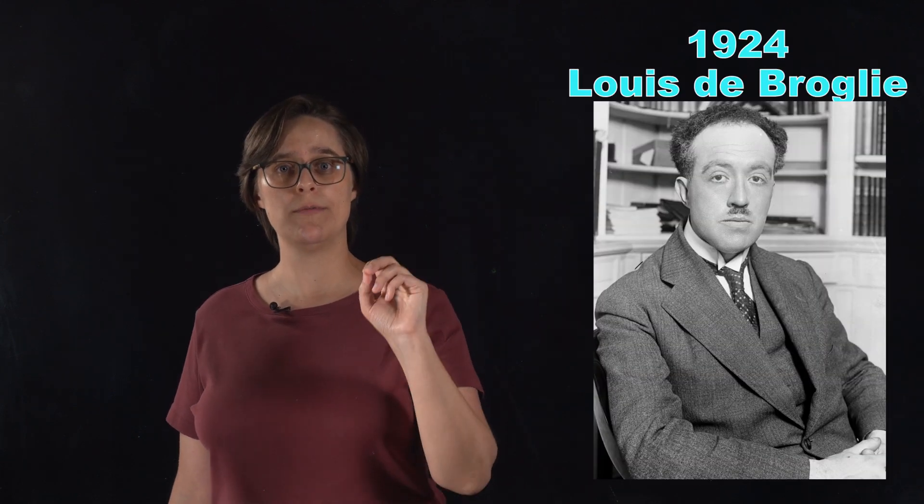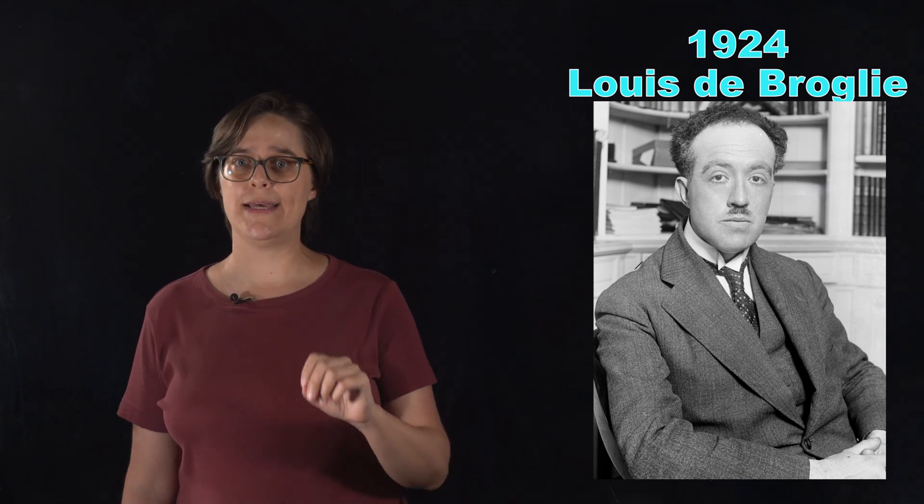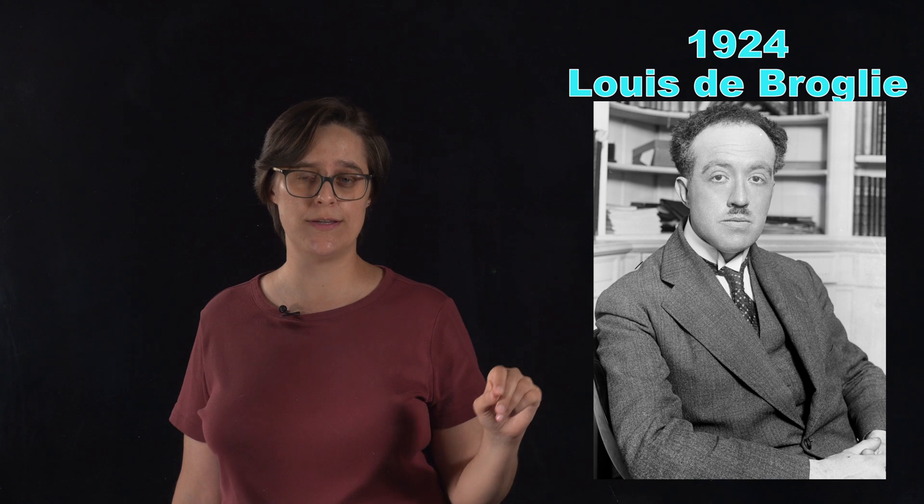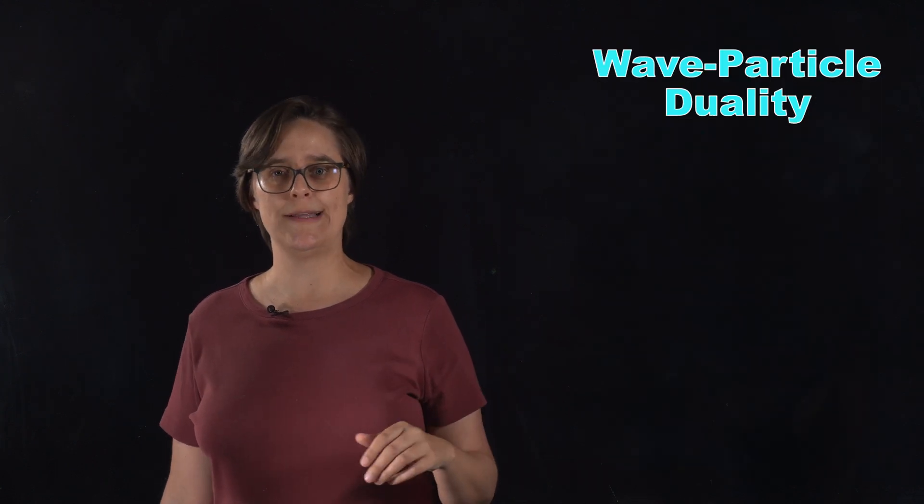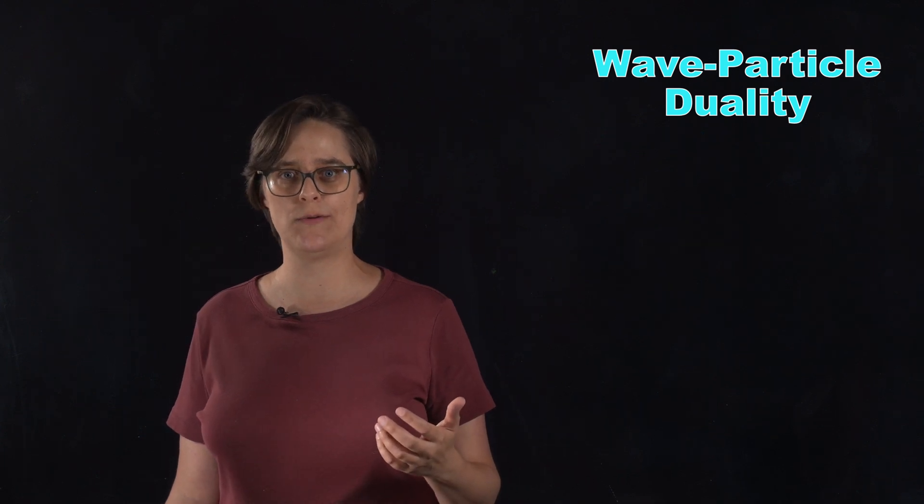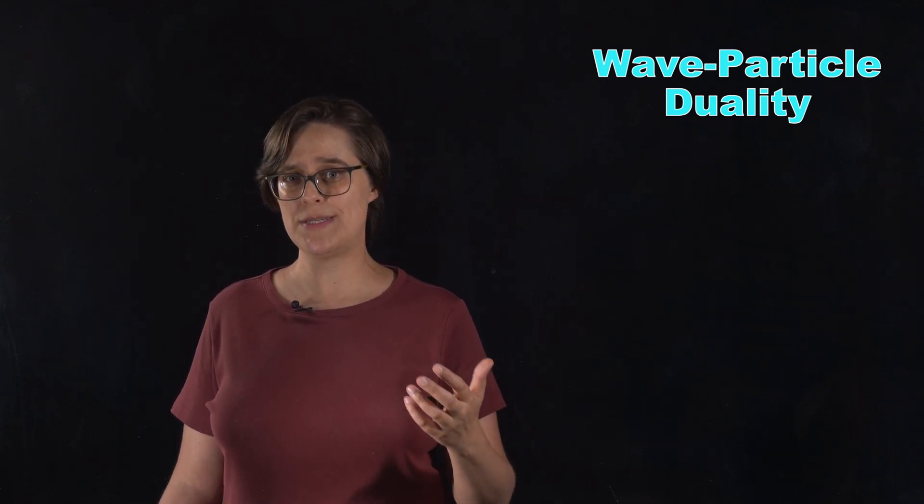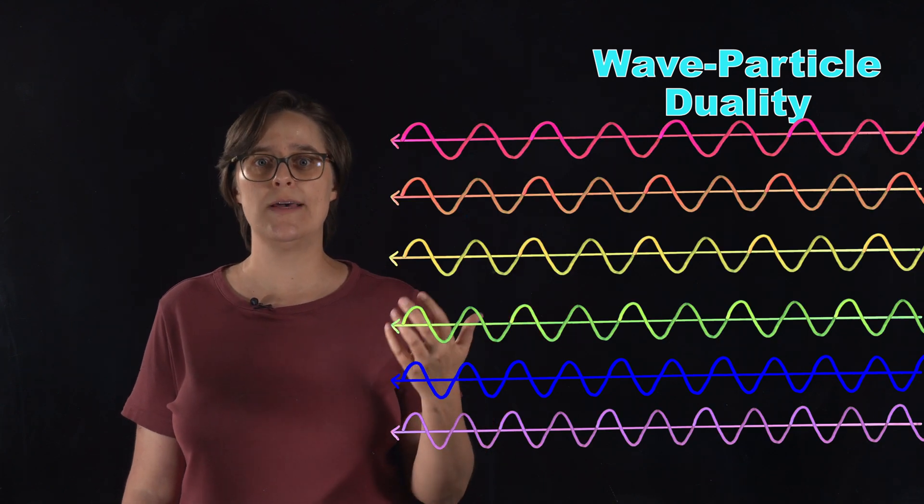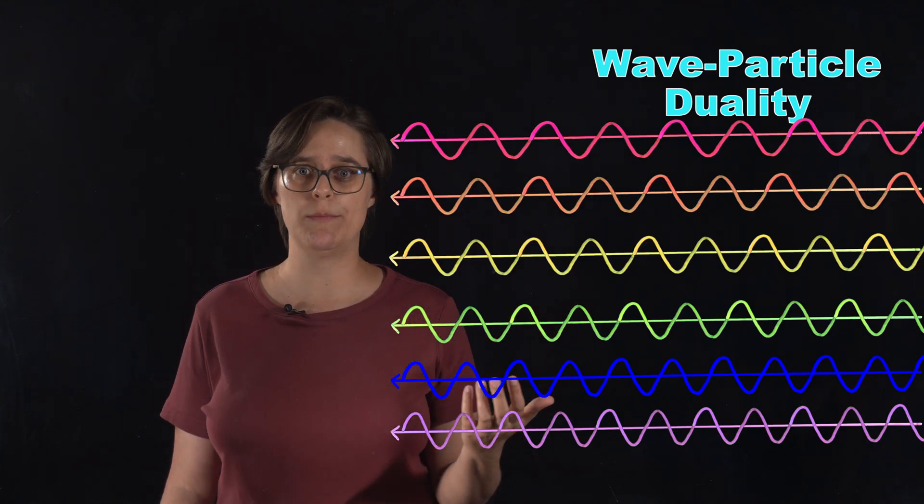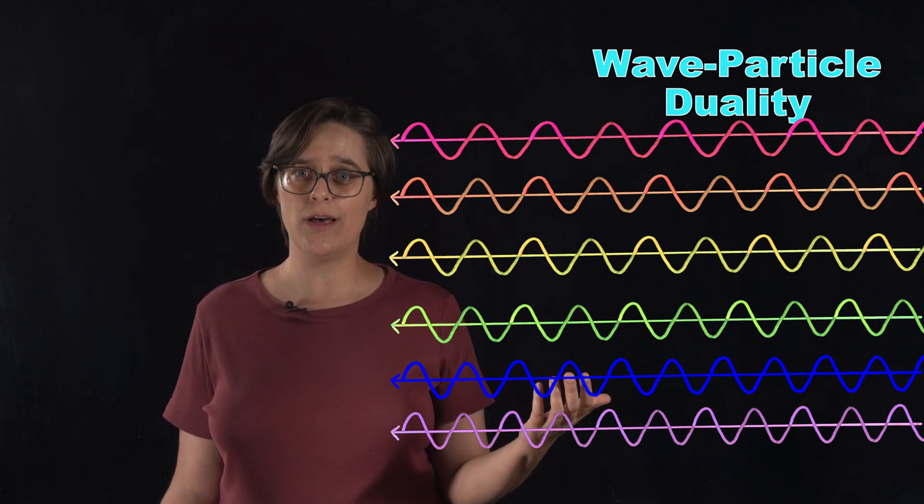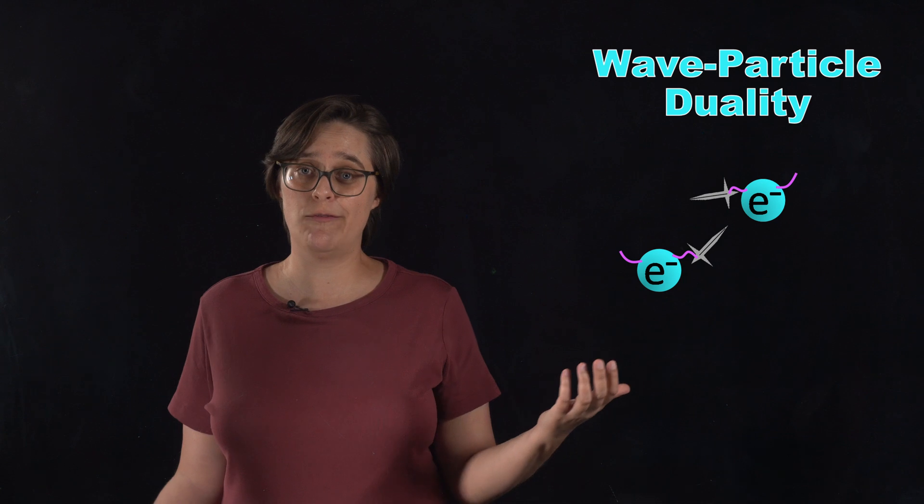In 1924, Louis de Broglie proposed that electrons and all matter exhibit both particle and wave-like properties. Wave-particle duality is completely unintuitive, but what it boils down to is that sometimes the mathematical equations that we have for waves let us calculate things about subatomic particles that are consistent with our observations, and other times, equations that we have for particles work.